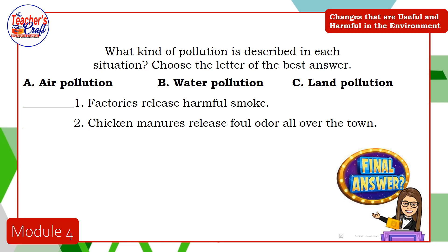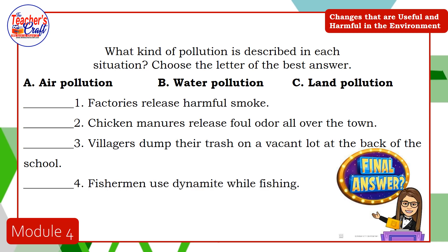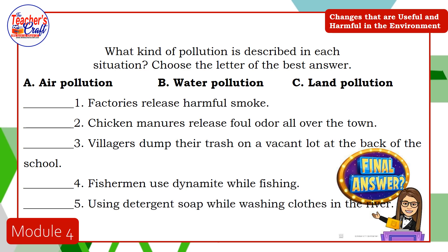Number three: villagers dump their trash on a vacant lot at the back of the school. Correct, this is letter C. Number four: fishermen use dynamite while fishing. Very good, letter B is the answer. Last one: using detergent soap while washing clothes in the river. Correct, this is letter B.